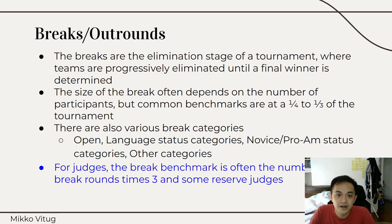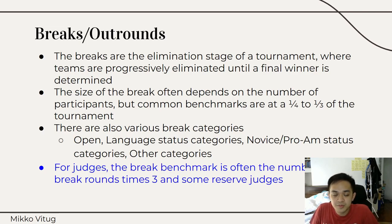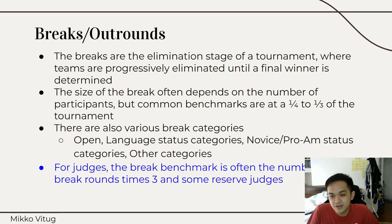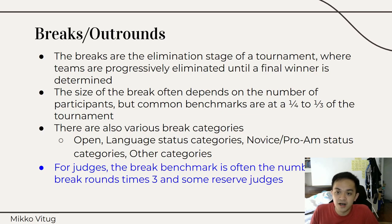For breaks and out-rounds, this is where teams are no longer assured they will do this part of the tournament. The break is the elimination stage where teams are progressively eliminated until a final winner is determined — if you lose, you are out; if you win, you proceed. The size of the break often depends on the number of participants, but the common benchmarks are a fourth to a third of the tournament, so breaks are almost always less than half. For example, at the World Universities Debating Championship, which has hundreds of teams — say 400 — having 100 teams in the elimination stage would be logistically difficult, so they cap it at around 48 teams.